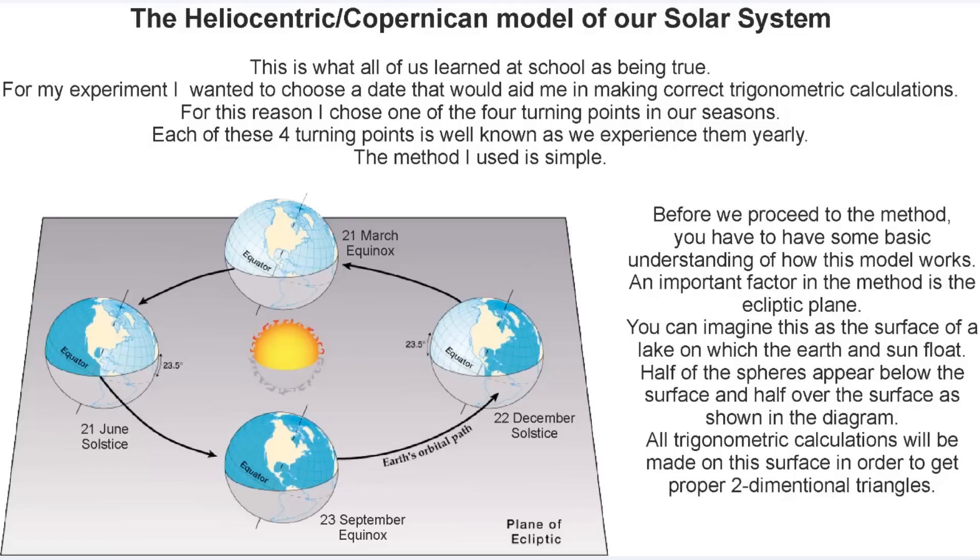But before we proceed to the method, you have to have some basic understanding of how this model works. An important factor in this method is the ecliptic plane, as shown here in the diagram. You can imagine this as a surface of a lake on which the Earth and the Sun float. Half of the spheres appear below the surface, and half of the spheres appear above the surface of the lake. All trigonometric calculations would be made on the surface in order to get proper two-dimensional triangles.